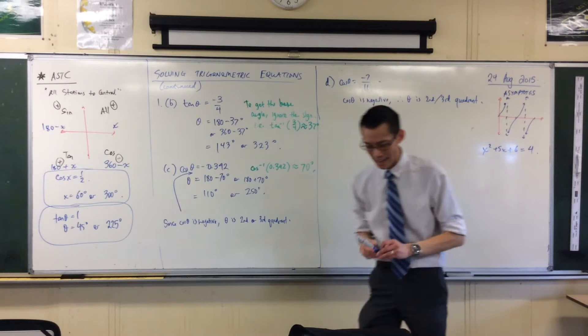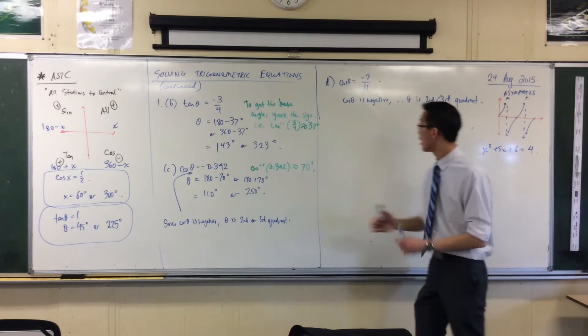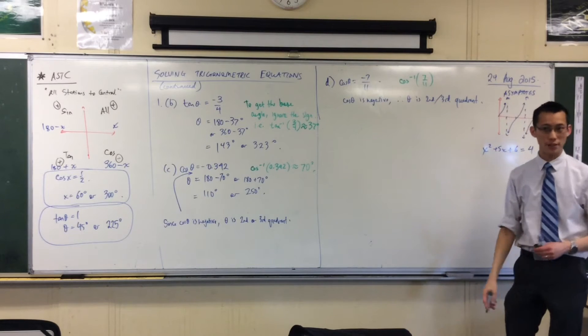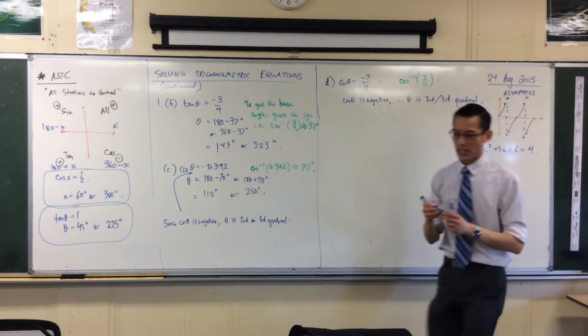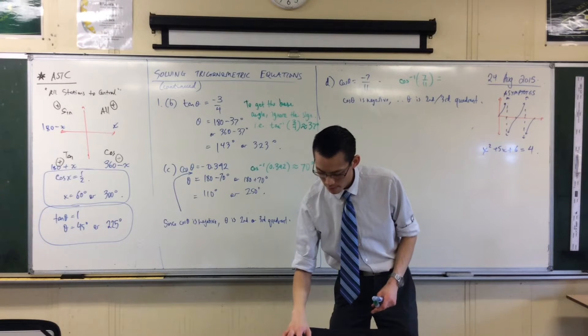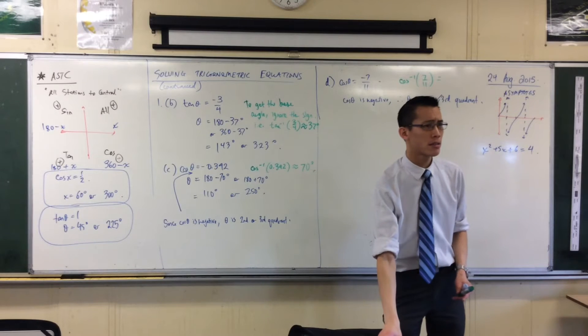therefore theta is second, third quadrant. So to get my base angle, this guy here, I'm going to go cos inverse and I'm going to ignore that sign. 7 over 11, which gives me, has anyone got it faster than me? I'm getting 50 degrees? 50 degrees?